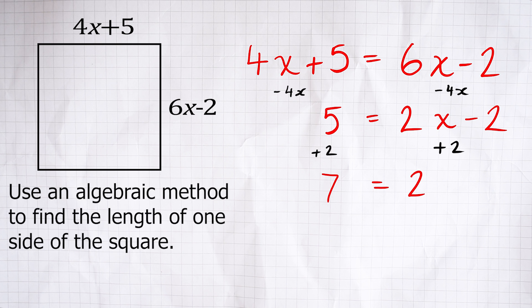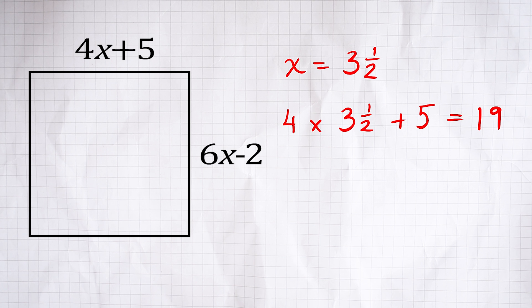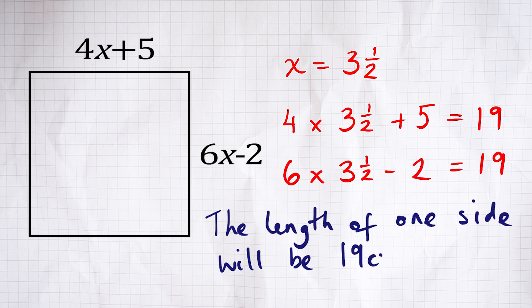Adding 2 to both sides gives 7 = 2x, and dividing both sides by 2 gives x = 3.5. We can check our answer by substituting 3.5 back in: 4 × 3.5 = 14, add 5 gives 19; and 6 × 3.5 = 21, take away 2 is also 19. Both sides are 19, so we've done it correctly. Whenever we know two things are equal, we can set up an equation — and you already know how to solve equations, so it's just a case of recognizing when to apply them.